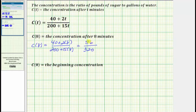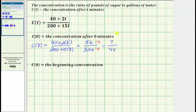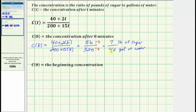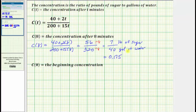The greatest common factor between 56 and 320 is eight. To simplify, we divide both values by eight. 56 divided by eight is equal to seven. 320 divided by eight equals 40. Including the units, this is seven pounds of sugar per 40 gallons of water. So after eight minutes, the concentration is seven pounds of sugar per 40 gallons of water. Converting to a decimal: seven divided by 40 is equal to 0.175 pounds of sugar per gallon of water.